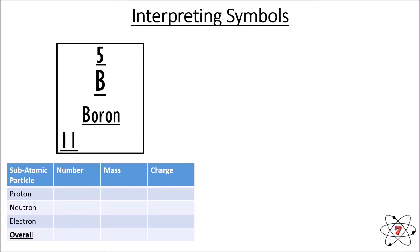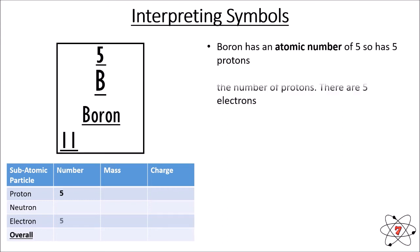Let's look at how we can interpret these symbols and work out the number of protons, neutrons, and overall charge. Here we have the element boron. It has the number five at the top, which is the atomic number or proton number. It has the symbol capital B, its name boron, and the number 11 at the bottom, which is the mass number. So boron has an atomic number of five, meaning it contains five protons. Remember, the atomic number is always equal to the number of protons. Since the number of electrons always equals the number of protons, if there are five protons in boron, then there must be five electrons.